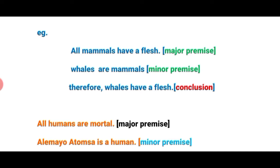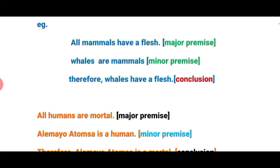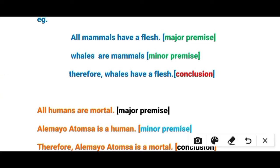Let's look at these examples carefully. We will also identify major premises and minor premises. A major premise is a premise which includes all things or a general idea. A minor premise is a premise which is included in the major premise. For example: 'All mammals have flesh' — that is the major premise. 'Whales are mammals' — that is the minor premise. Therefore, 'whales have flesh' — that is the conclusion.